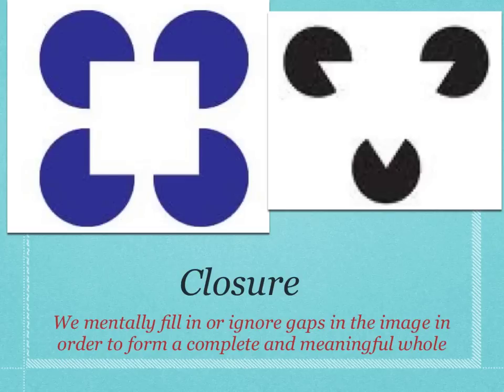Let's move on to Closure, where we mentally fill in the gaps between sensory information or we ignore the gaps. In the case of the image on the left, what do you see? Do you actually perceive that as three quarter circles, or do you perceive a white square on top of those circles? Well, if the latter, then what you have done is mentally ignored the gaps in that sensory information or filled them in.